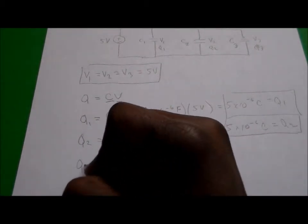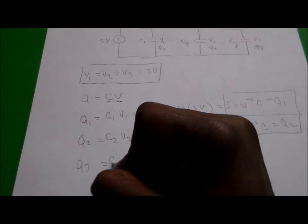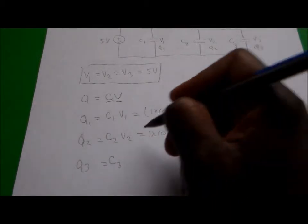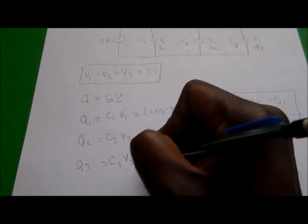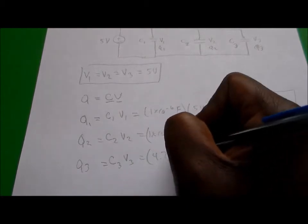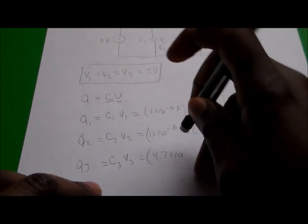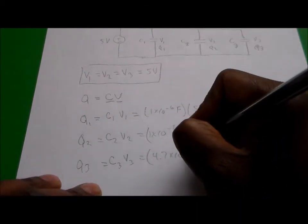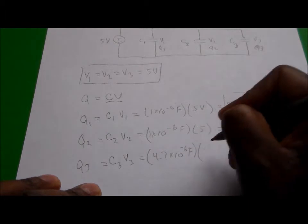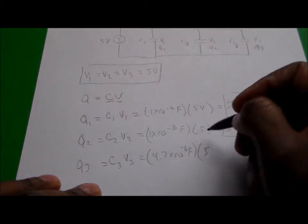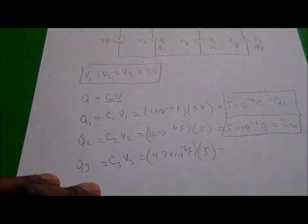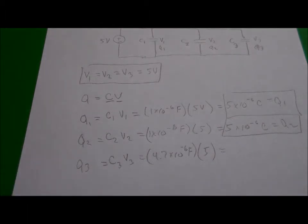Now number 3, Q3, is going to be equal to capacitor number 3 times V3, and that's therefore 4.7 times 10 to the minus 6 farads, which is the same as microfarads, times the 5 volts. And we go ahead and calculate that out, and what do we end up getting here? That's 4.7 times 10 raised to the minus 6 times 5.